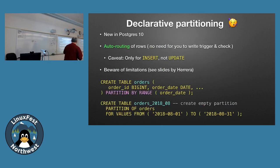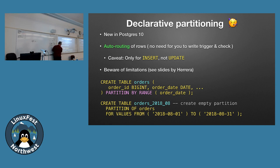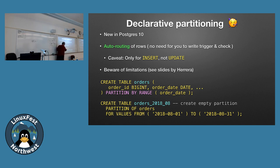In Postgres 10, they introduced new declarative partitioning. Now you can say you want to PARTITION BY RANGE based on an order date, create the related subtable, and the FOR VALUES FROM clause does all the routing work that used to require a trigger. You're not writing code anymore — it's a very simple definition on your table. They call this auto routing; rows automatically go to the correct partition table when you insert.